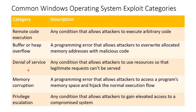There's also denial of service — any condition that allows an attacker to use resources so that legitimate requests can't be served. That could be eating up all the bandwidth, CPU, RAM, disk, or all acceptable connections. There's memory corruption, not necessarily a buffer overflow, but a programming error that allows attackers to access a program's memory space and hijack the normal execution flow by just overriding something. There's also privilege escalation — any condition that allows an attacker to gain elevated access, for example going from normal user to administrator, or administrator to system.